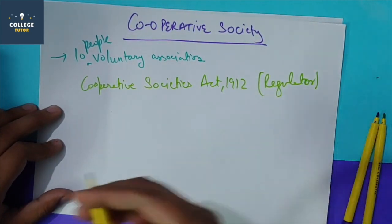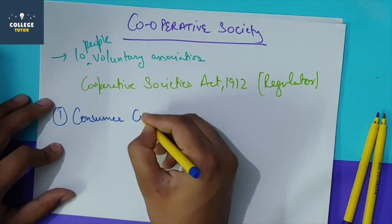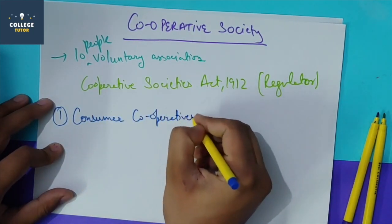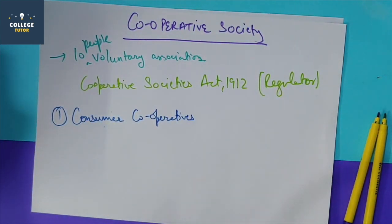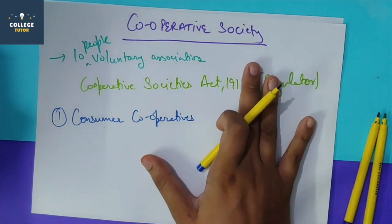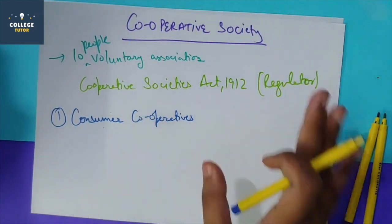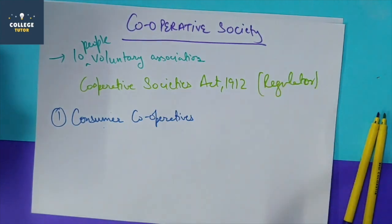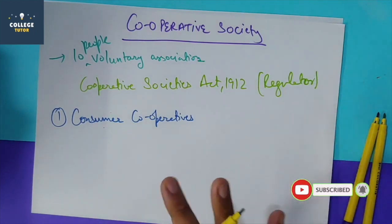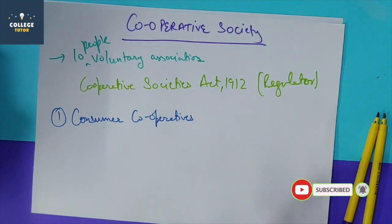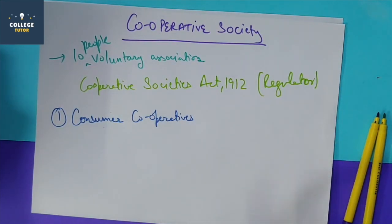First, we call these consumer cooperatives. As the name suggests, they are made for the consumer. The aim is consumer welfare - to make available good quality goods at reasonable prices for consumers. Examples include Kendriya Bhandar in Delhi, and similar stores we see in South India, which are examples of consumer cooperative societies.